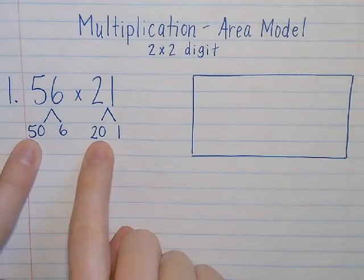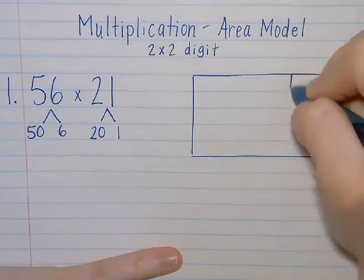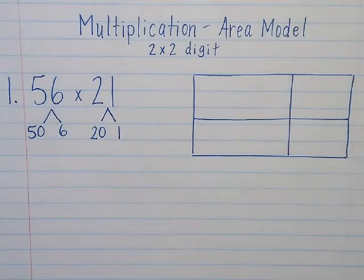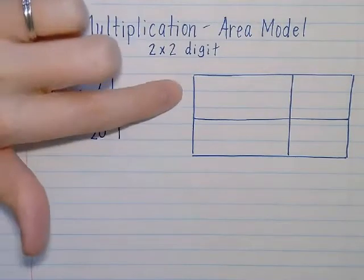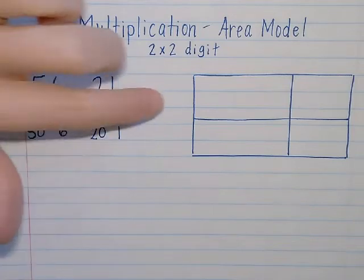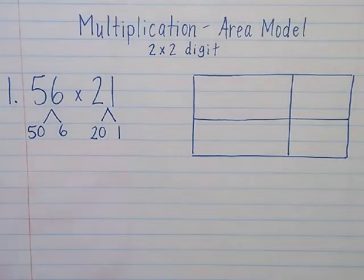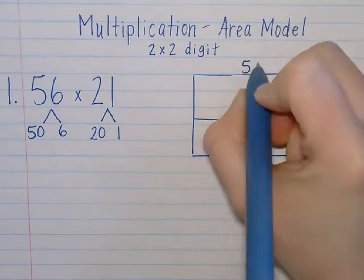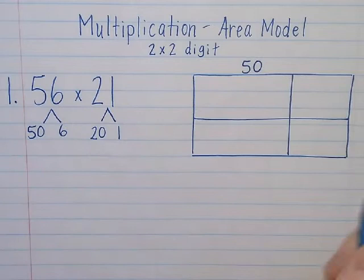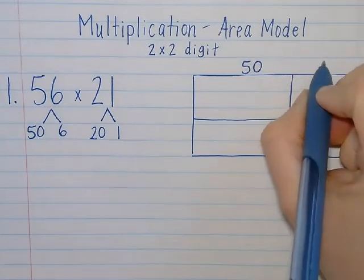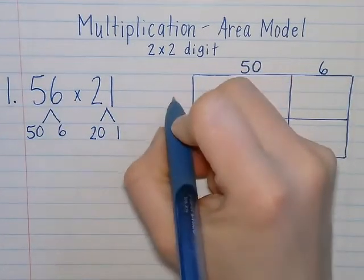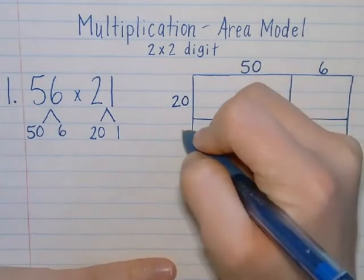I need 2 tens and 2 ones. So what that might look like is splitting it up like this. It doesn't matter where you put each of the numbers. I could put 56 up here. I could put it down the side. As long as each section represents one of these numbers. For example, I like to put the bigger number on top. So this part is going to represent 50. This part right here is going to represent 6. Now I have to place 20 and 1 over here. So this side is going to represent 20, and this side is going to represent 1.